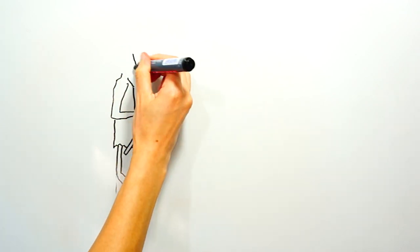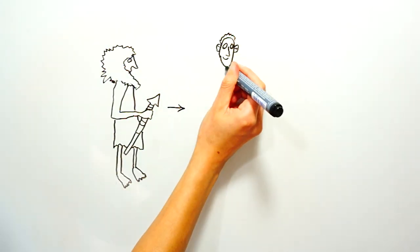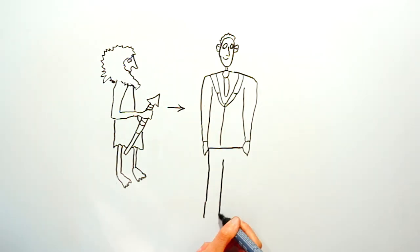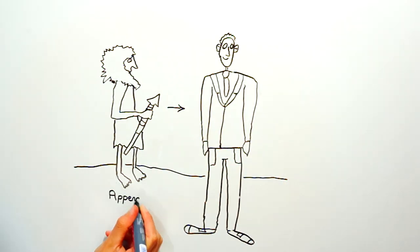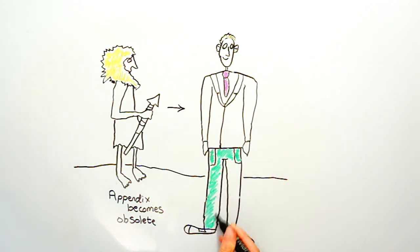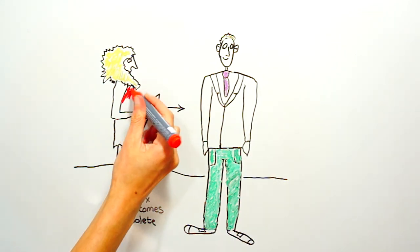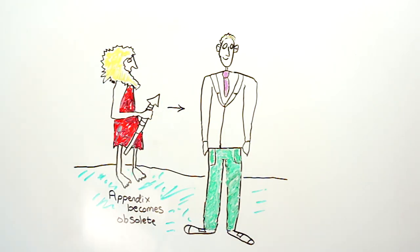So the appendix probably had a very important role during our time as hunter-gatherers, which became obsolete as we started to cook food and recognize the importance of hygiene. This probably resulted in the appendix shrinking to its current size now, but it still has some benefit in supporting the immune system and protecting the health of the digestive system.